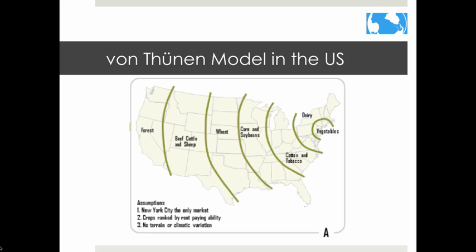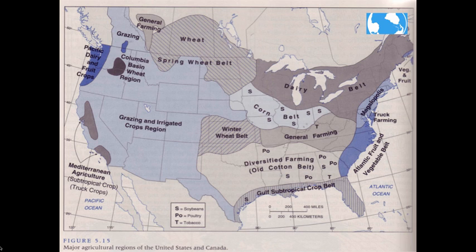The Von Thünen model can be applied to the United States, where most of the landscape was built after modern transportation like the railroad, so transportation costs have less influence than in Europe or Asia. One figure represents the agricultural land use model if the most basic assumptions of the isolated state were applied, with New York and the megalopolis as the market. Crops are ranked by rent, but terrain and climate are not accounted for, so while this image has some connections to reality, it is not exactly accurate.